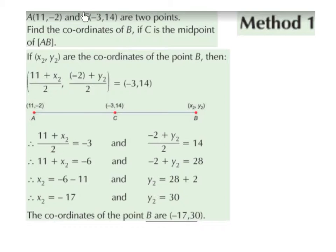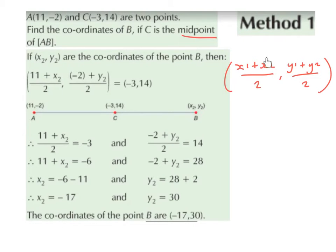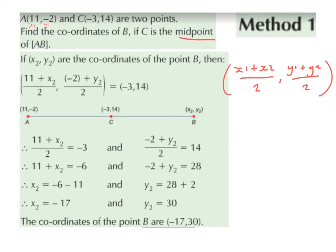A, (11, -2) and C, (-3, 14) are two points. Find the coordinates of B if C is the midpoint of AB. So this is Method 1. To work this out, we're going to use our formula for the midpoint, which is (x1 plus x2) divided by 2, comma, (y1 plus y2) divided by 2. We know that point A is going to be x1, y1. But we don't know what the coordinates of B are — that's what we're trying to find out. So we're going to leave B as x2, y2.